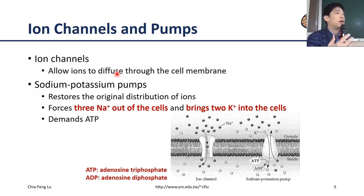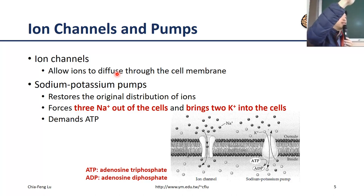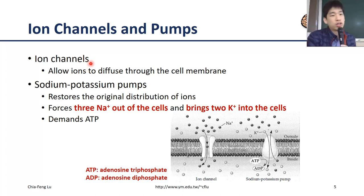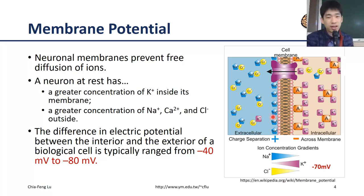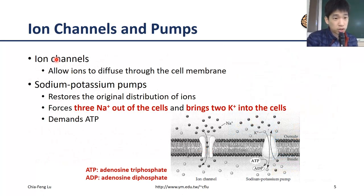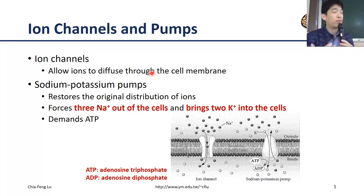Diffusion means ions move from high-gradient space to low-gradient space, just like water flowing from a high level to a low level. Once the ion channel opens, ions follow the gradient: since sodium concentration is higher outside the cell, sodium will naturally flow in when the channel opens. Similarly, if the potassium ion channel opens, potassium will move outside the cell. This ion channel is like a gate — once open, you don't need to expend any energy; the ion simply follows the gradient.